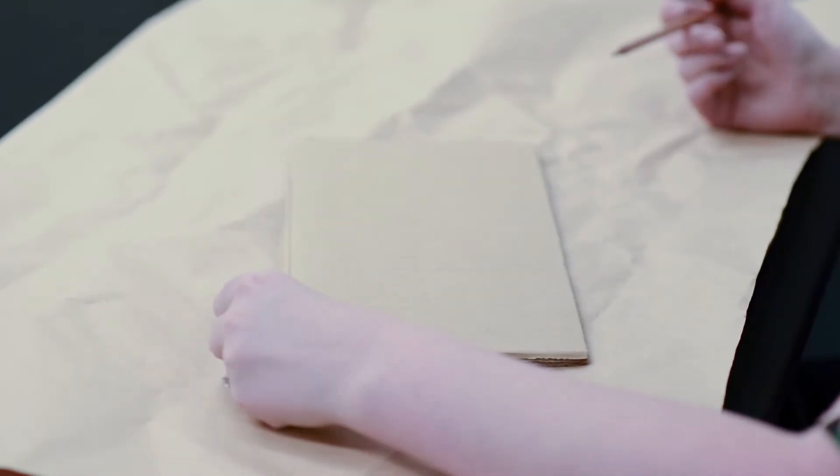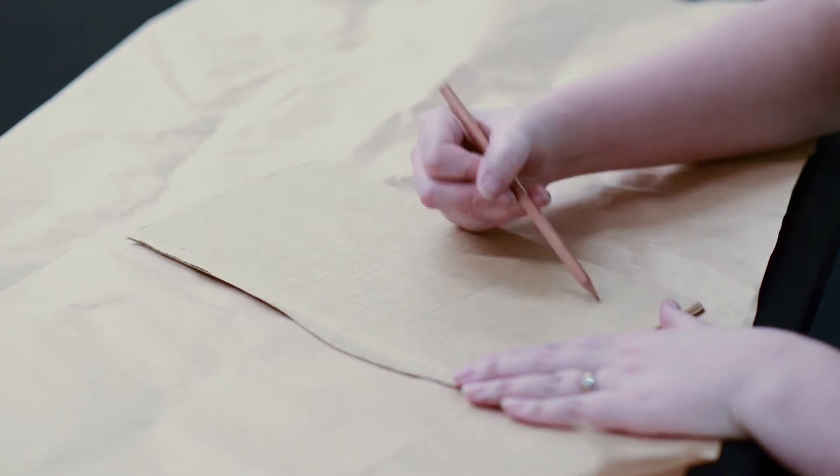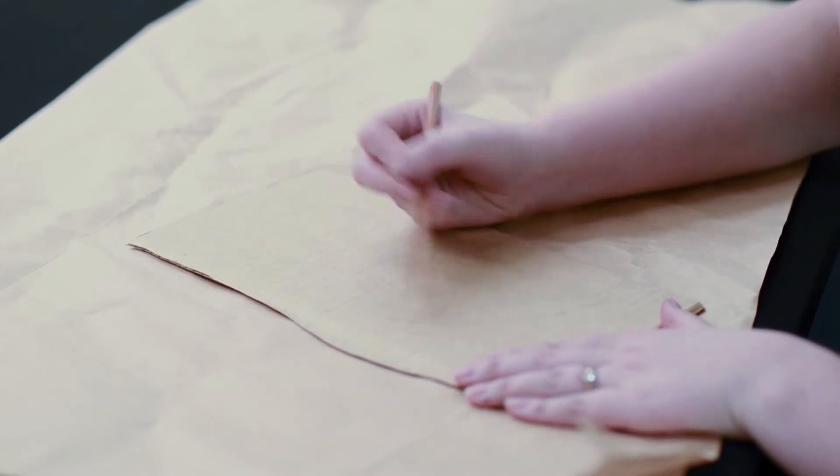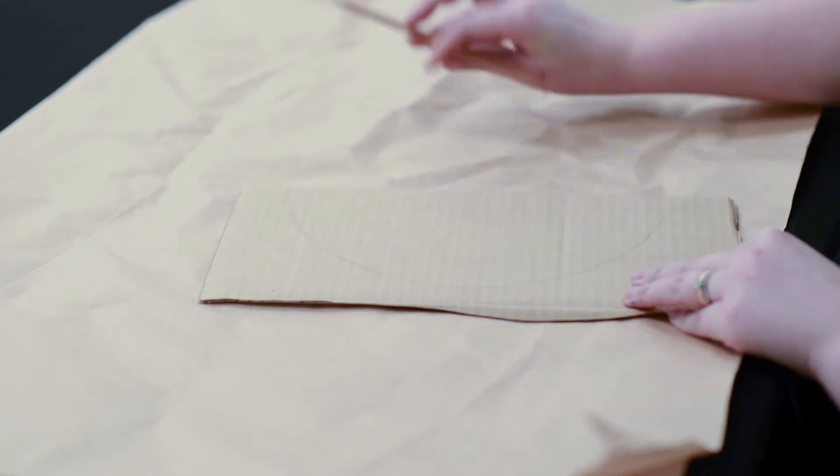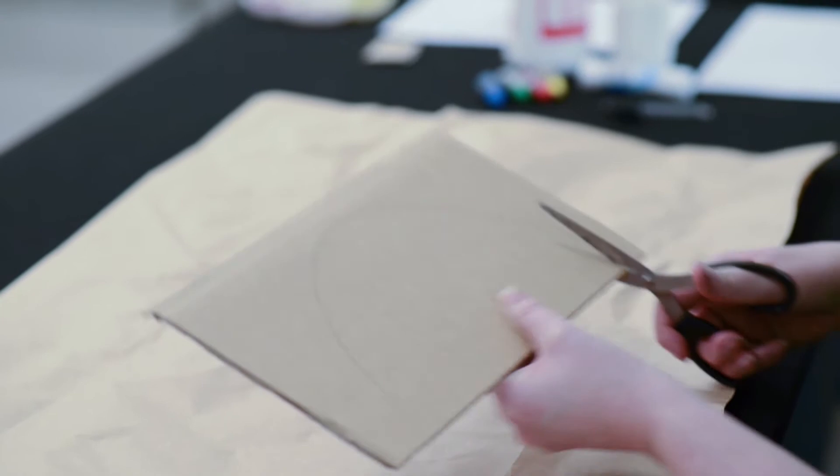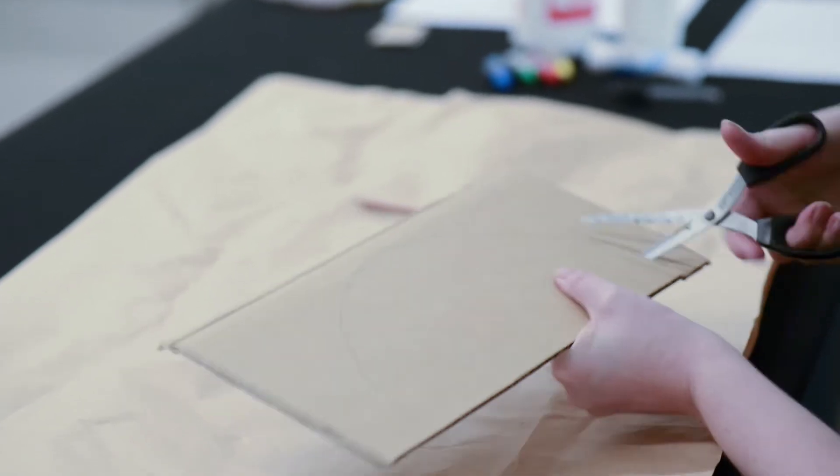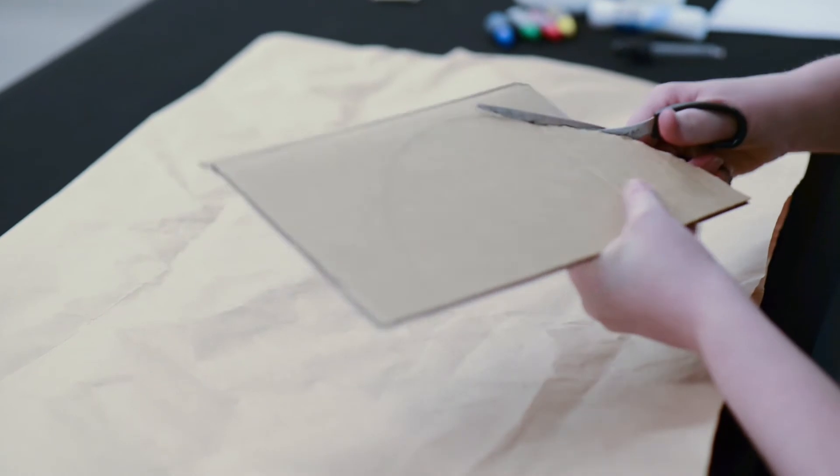The first step to creating your rainbow salt painting is to sketch out the shape or the arch of your rainbow. Once you're happy with the shape you can cut it out. You might need an adult to help you with this bit because the cardboard is a little bit tricky to cut.